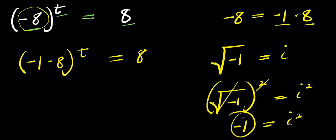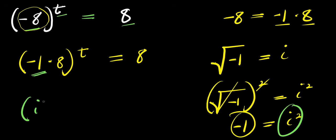So negative 1 equals imaginary number i squared. Then I come over here — I have negative 1 here — and I'm going to replace it with i squared. So i squared times 8 raised to the power T equals 8.